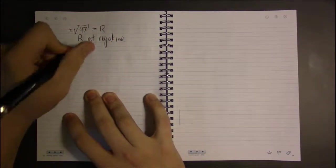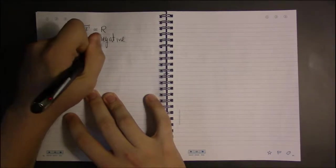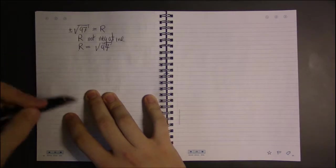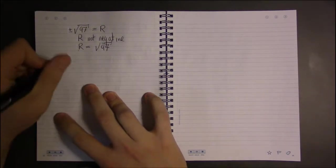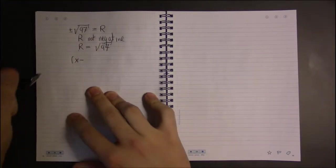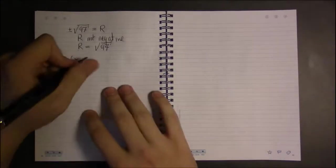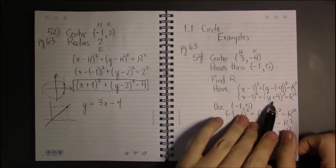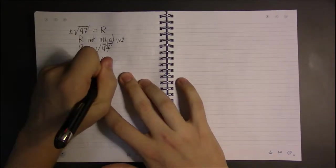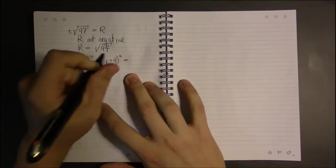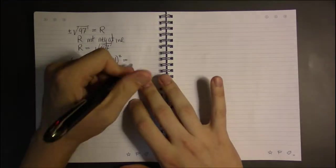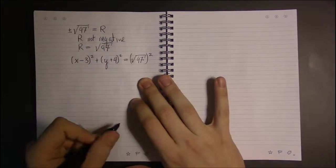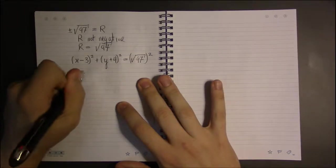The only answer here is that R, the radius, has to be the square root of 97. So we've done it. We now know what R is. We can write the equation of a circle. Our answer is the equation of the circle: x minus three squared plus y plus four squared, and before we had just R squared when we didn't know what R is, but now we do. R is square root of 97, and we're squaring this. Well, squaring a square root is quite simple. It's just what's inside the square root.